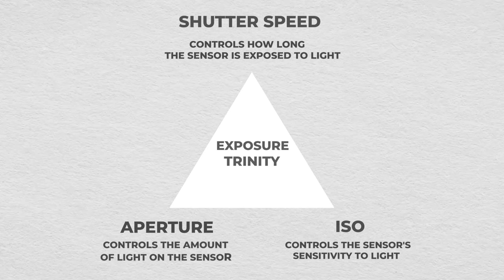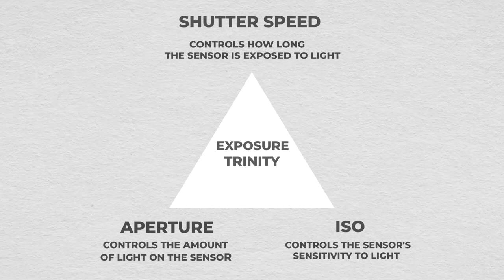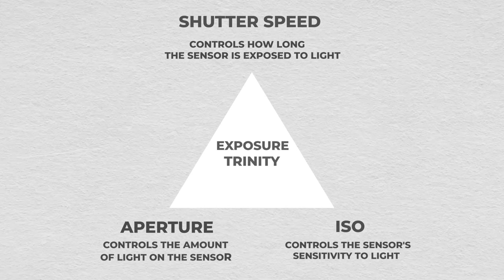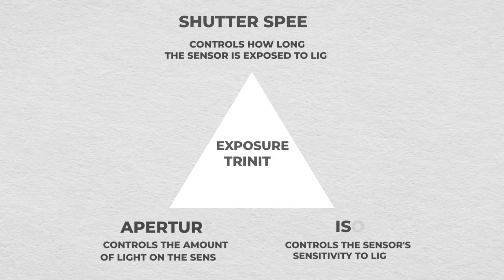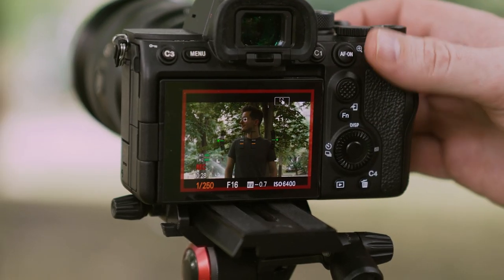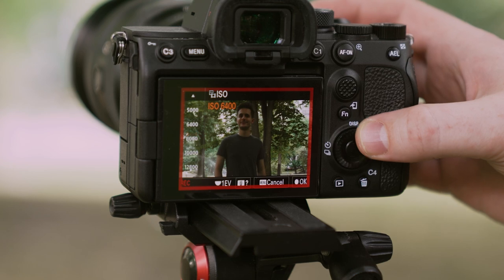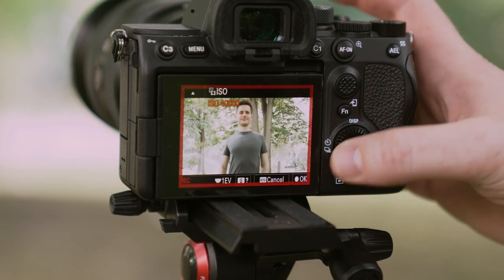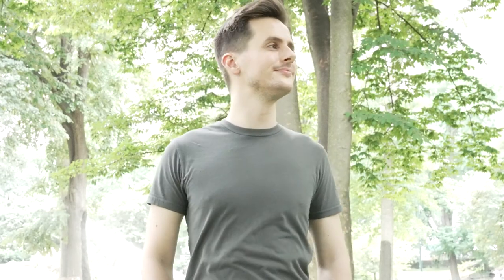ISO controls your camera's sensitivity to light. The higher the ISO, the brighter your image will become. This comes at the expense of introducing noise into your footage, however, so it's generally recommended to shoot in as low an ISO as possible — or alternatively, a camera will often have a native ISO that it performs best at.